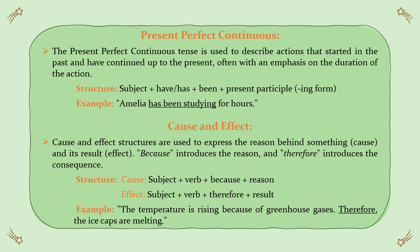Cause and effect structures are used to express the reason behind something (cause) and its result (effect). 'Because' introduces the reason, and 'therefore' introduces the consequence. Structure — Cause: subject + verb + because + reason. Effect: subject + verb + therefore + result. Example: The temperature is rising because of greenhouse gases. Therefore, the ice caps are melting.